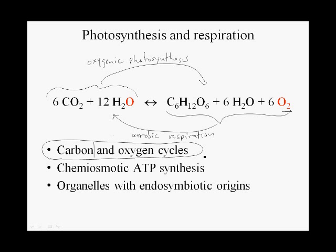Both of these processes — oxygenic photosynthesis and aerobic respiration — feature chemiosmotic ATP synthesis, meaning we have ATP synthesis driven by a proton gradient across the membrane, and ATP synthase in both cases is pretty much the same. Both processes are carried out in organelles with endosymbiotic origins.